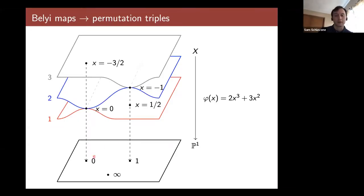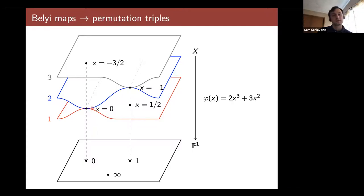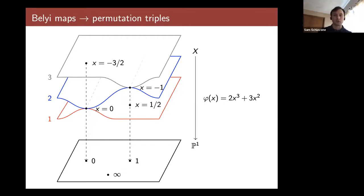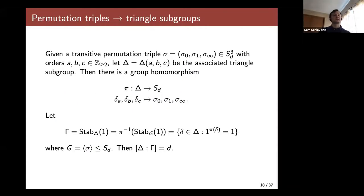Let's look at our degree 3 Belyi map example. If we take a loop around 0 in the codomain and lift it to a path starting on the red sheet labeled 1, we end up on sheet 2 — giving the transposition (1 2), matching ramification index 2. Similarly, taking a loop around 1 exchanges those two sheets. The images of the three generators of the fundamental group of P1 minus three points give us our permutation triple.